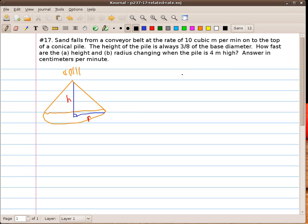conical pile. The height of the pile is always 3 eighths of the base diameter. How fast are the height and radius changing when the pile is 4 meters high? Answer in centimeters per minute.